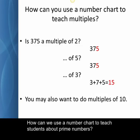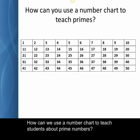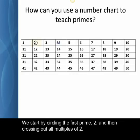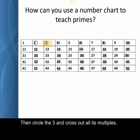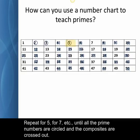How can we use number charts to teach students about prime numbers? We start by circling the first prime, 2, and then crossing out all multiples of 2. Then circle 3 and cross out all its multiples. Repeat for 5, for 7, etc., until all the prime numbers are circled and the composites are crossed out.